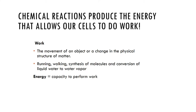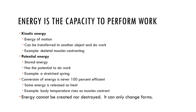Chemical reactions allow us to do work. Work is the movement of an object or change in the physical structure of matter, and we need energy — the capacity to do work. Energy comes in different forms. Kinetic energy is energy in motion, such as when skeletal muscles contract, water flowing down a waterfall, or electricity in a wire. Potential energy, also called latent energy, is stored energy that has the potential to do work — like the food you eat or gasoline in your car.